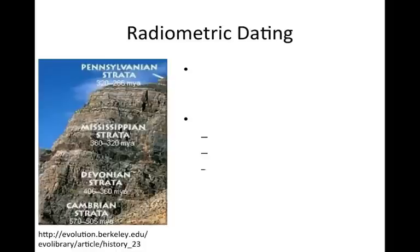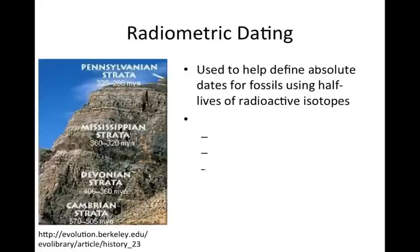Fossils are laid down in sedimentary rock, but it is often easier to date the igneous or volcanic rock layers that are above or below the fossils. We do this using half-lives, which gives us a better sense of absolute dates. Depending on the age of the rock, you have to rely on different radioactive isotopes, and that's where the volcanic ash layers come in — they have different isotopes that last longer and decay slower.